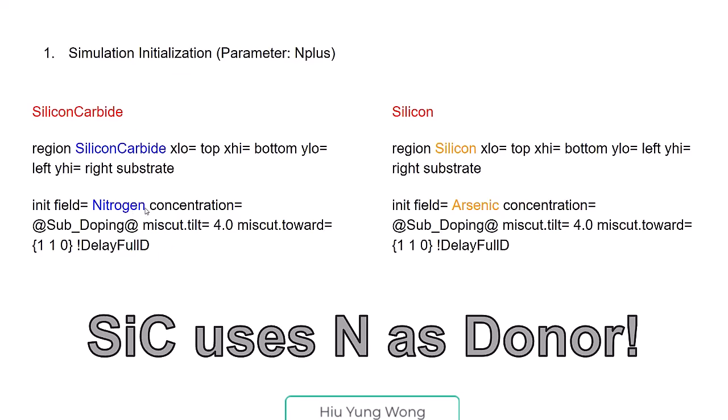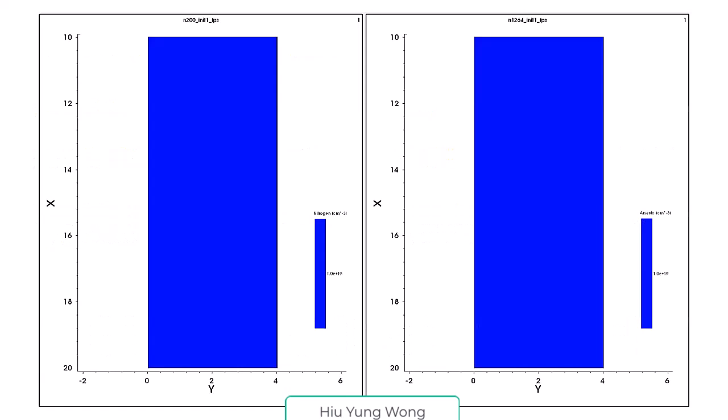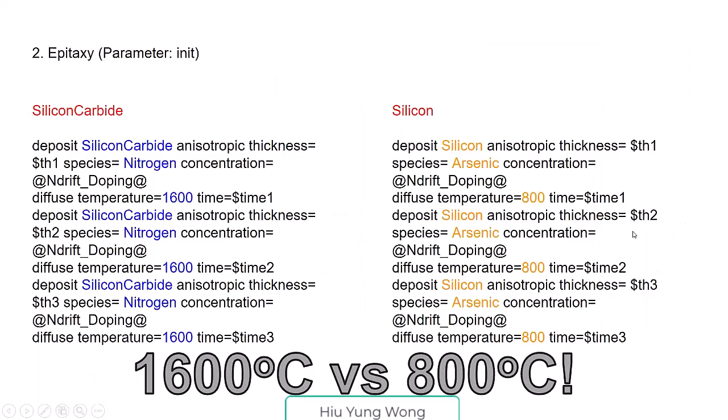Here we show that we start with the crystal and then start with nitrogen for silicon carbide, arsenide for silicon.